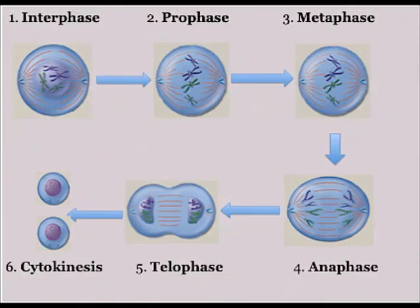Anaphase is where the microtubules contract and separate the sister chromatids from each other, pulling them towards the two poles of the cell. And last but not least, we got the telophase.